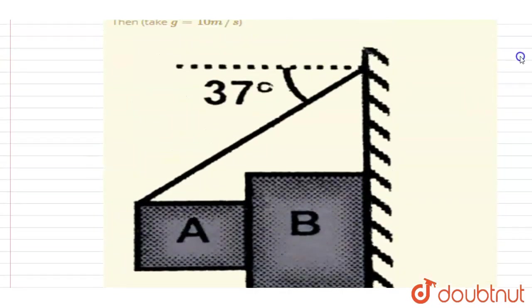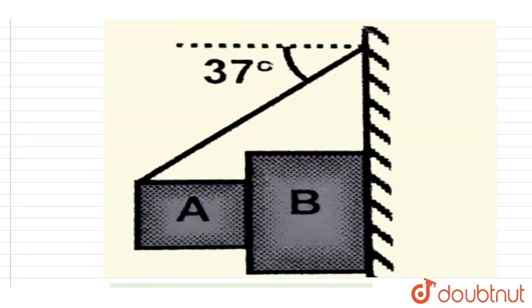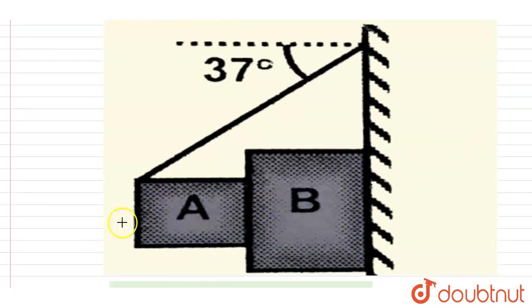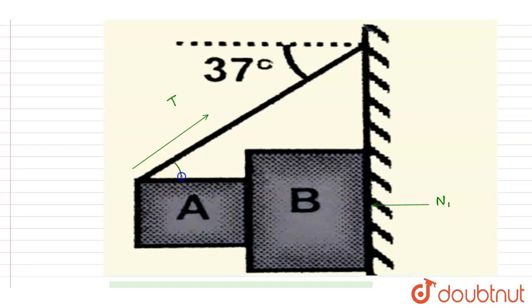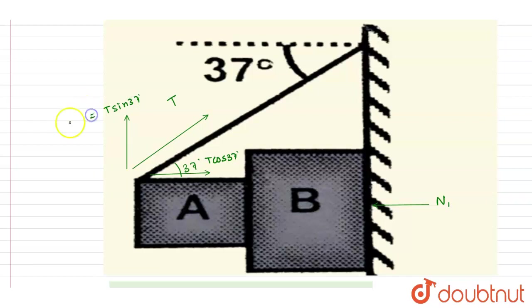To find that, let me draw the FBD of the two blocks taken as a system. On this system, the tension force is acting at 37 degrees, so its components are T cos 37° = 4T/5 and T sin 37° = 3T/5. The normal reaction by the surface N1 is also acting on the system.